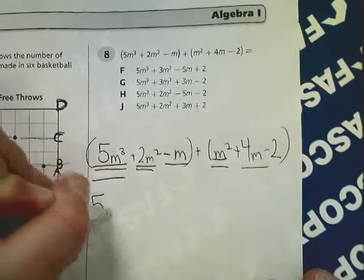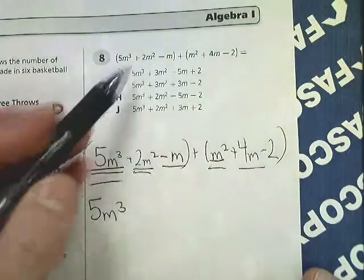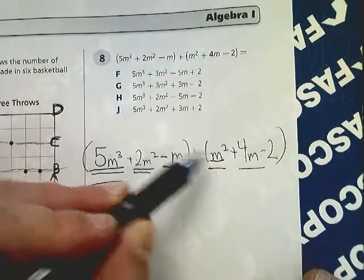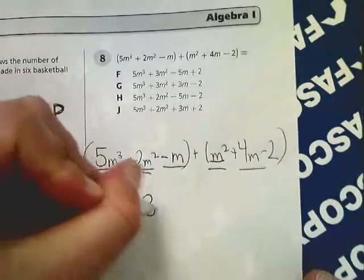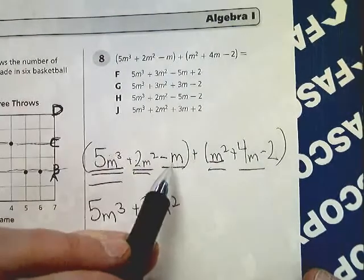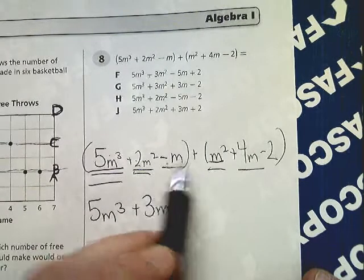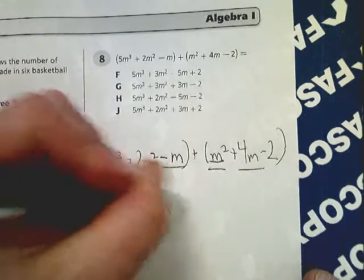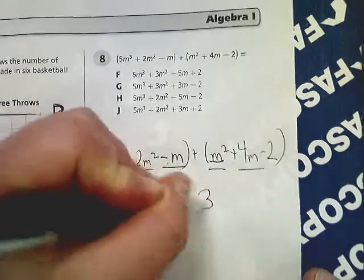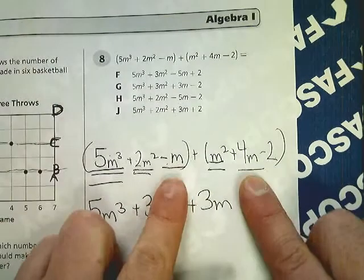My m to the third power, I'm just going to keep. I've got 2m squared plus 1m squared, which is 3m squared. Negative 1 plus 4 is 3m.